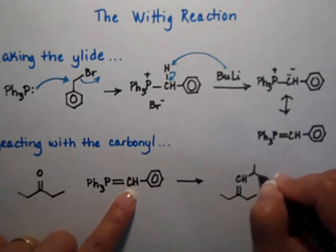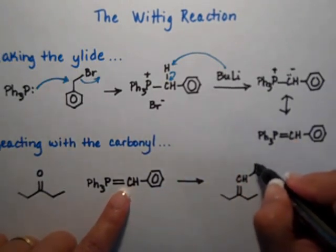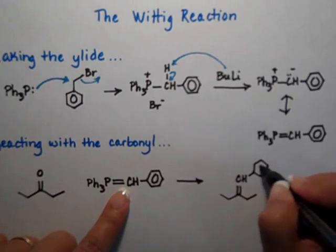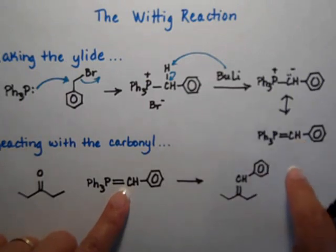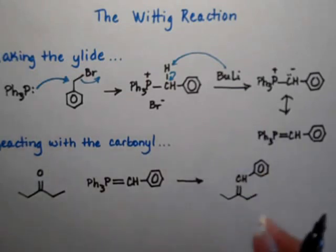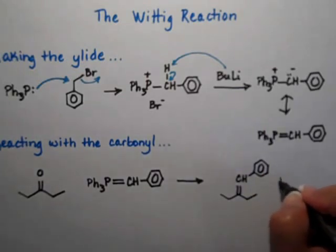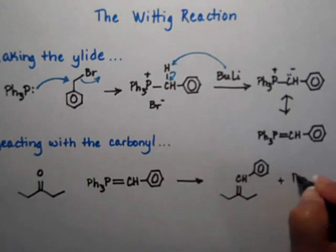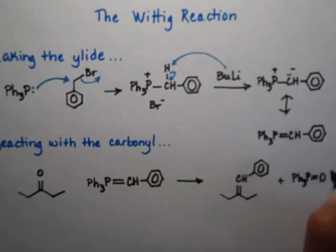And this reaction is very versatile on the things that you can have attached to your ylide. So if you want it, you can have an ester hanging off or more double bonds up there or in my case a phenyl ring. But the important thing about this is that you know where the double bond is going to be. There's no need to worry about more substituted double bond or less substituted double bond because you're putting the two carbons together so you know from the get go where the double bond is going to end up with.